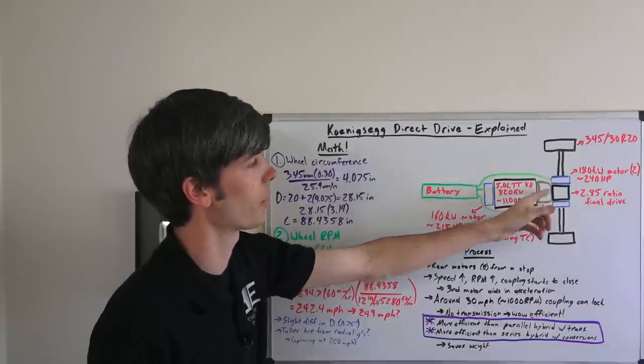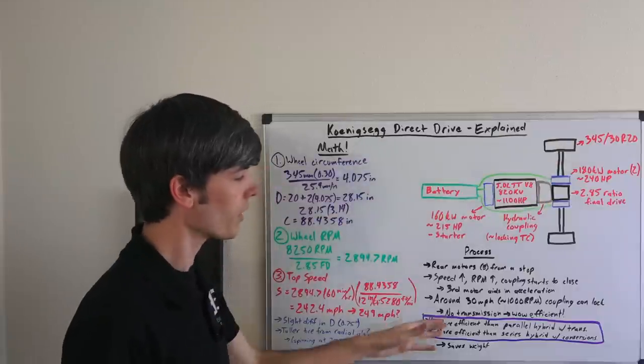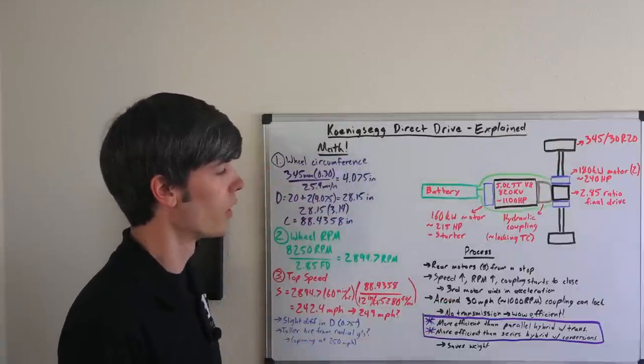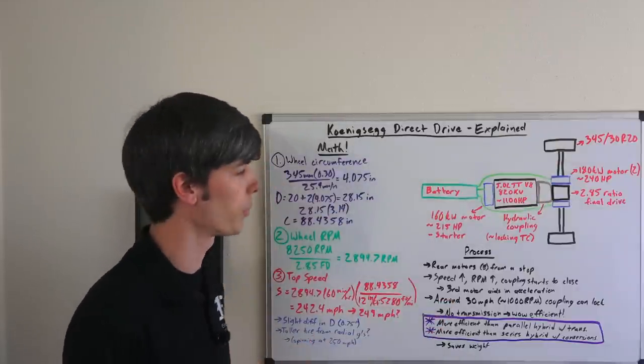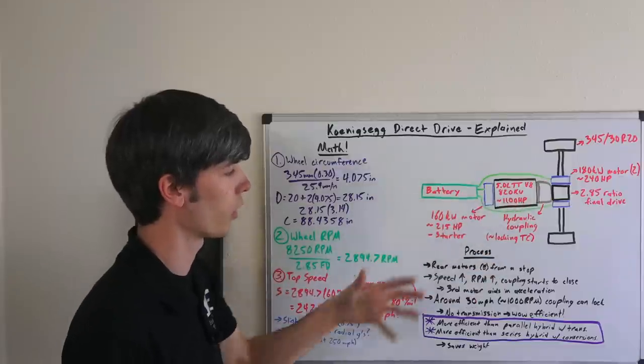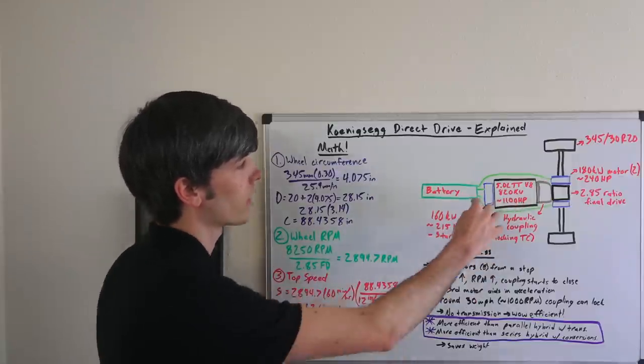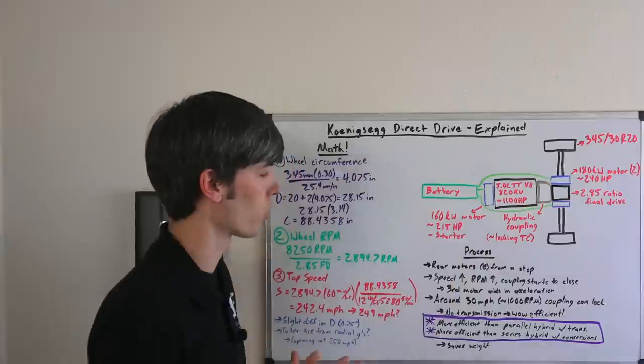Then around 30 miles per hour or a little bit after, you reach a thousand rpm. This hydraulic coupling can close up and once it's closed up, then you're directly driving from the engine to the rear wheels.